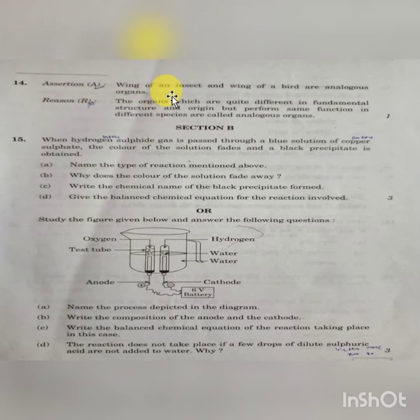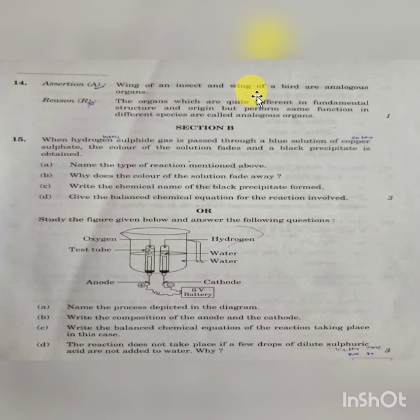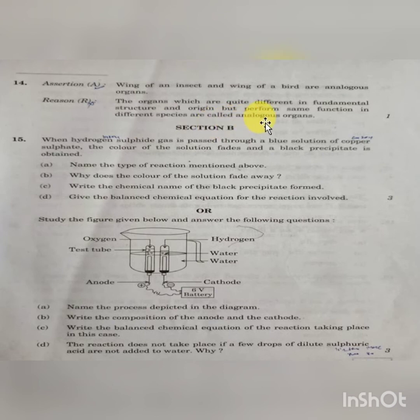Question 14 — Assertion: wings of an insect and wings of a bird are analogous organs — correct. Analogous organs have similar function but different origin. Both wings are used for flying, so they have similar function, but different origin. Reason: organs which are quite different in fundamental structure or origin but perform the same function in different species are called analogous organs. Both assertion and reason are correct.